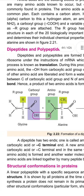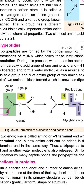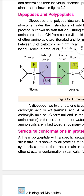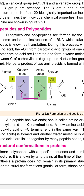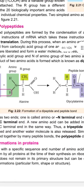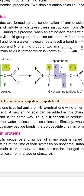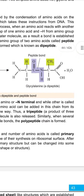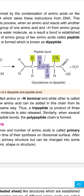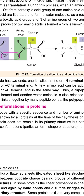So glycine and alanine join to give a dipeptide. One end is called the amino acid or N-terminal end, while the other is called the carboxylic acid or C-terminal end. Another amino acid can be added to the chain from its C-terminal end, forming a tripeptide as another water molecule is released. Similarly, when several amino acids are linked together by many peptide bonds, a polypeptide chain is formed.